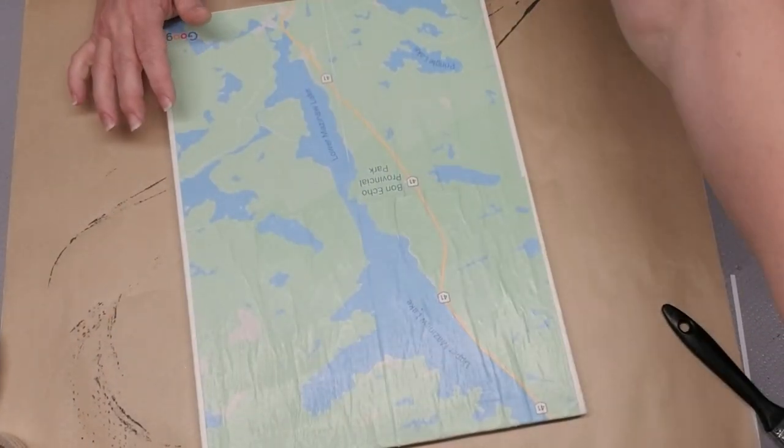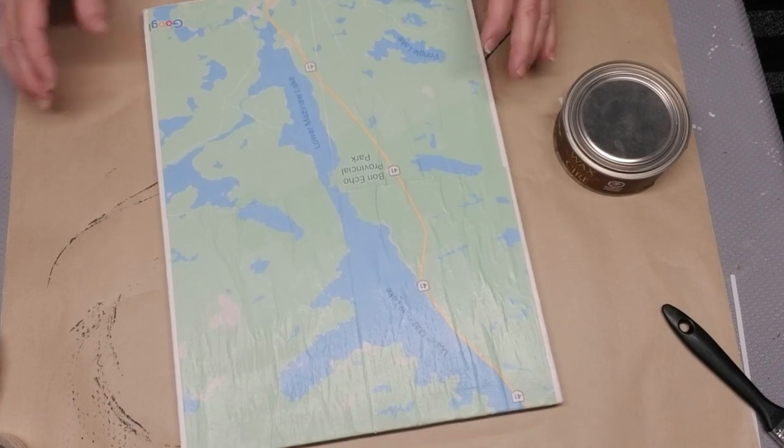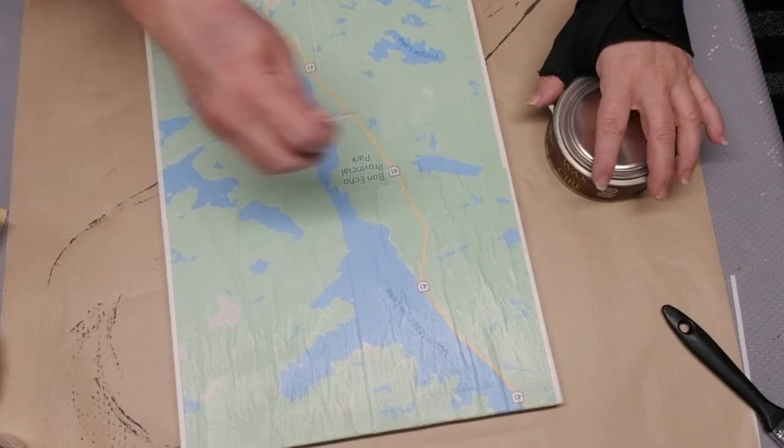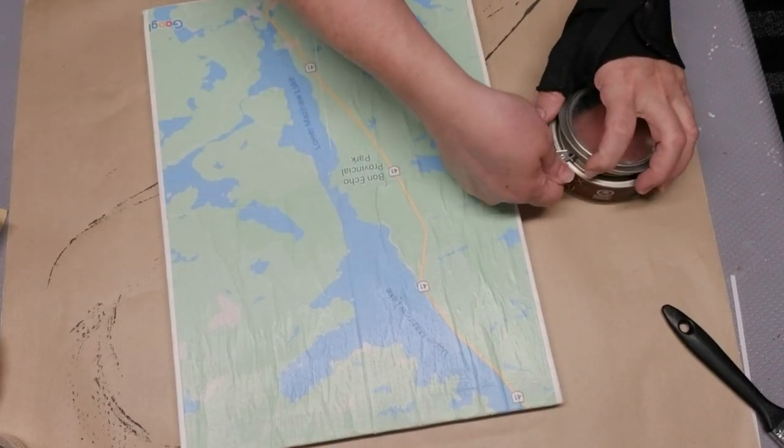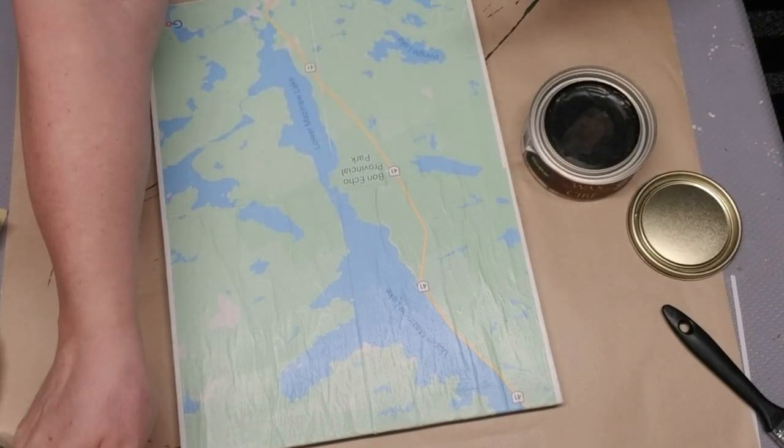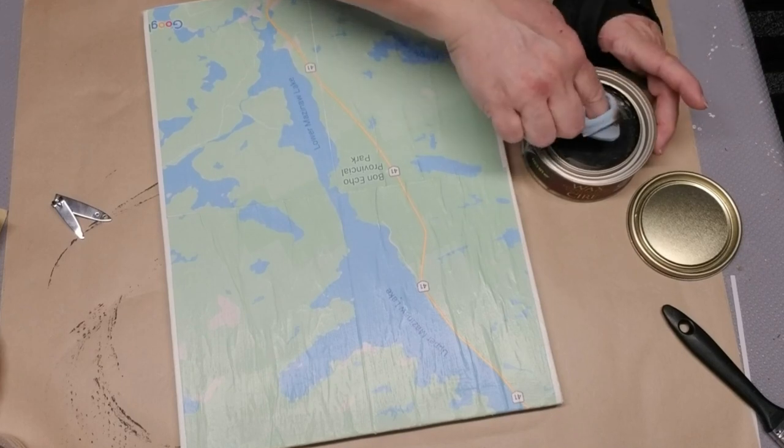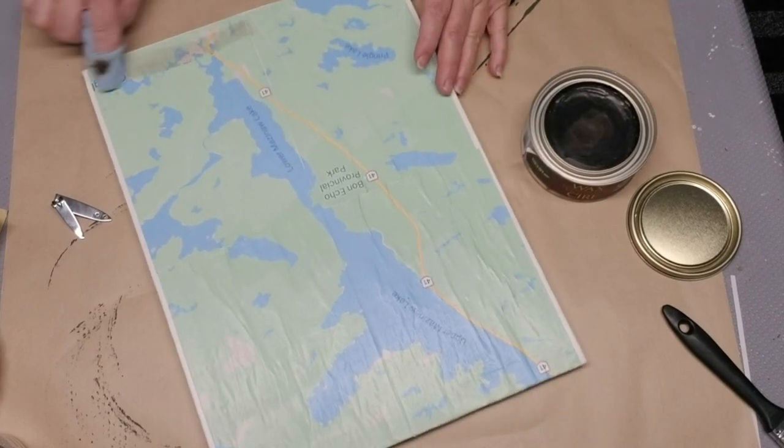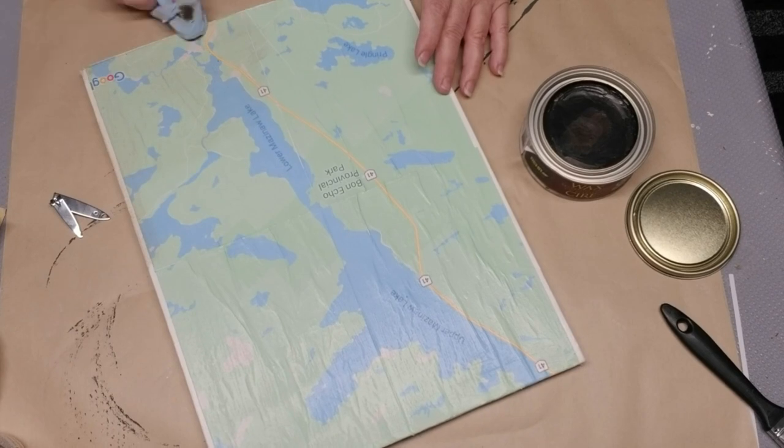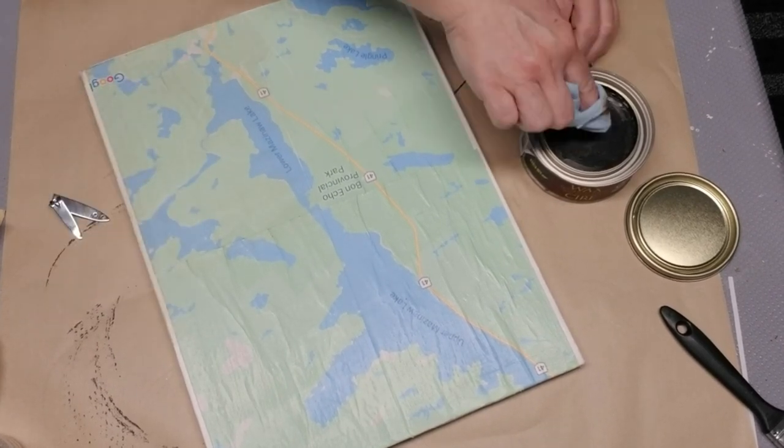To make this seem even more of an old map, I'm going to use some bare dark wax. I'm just going to use a cloth and wipe some on and then wipe it off. I'll do a little bit extra around the edges where you can see the white canvas to make it more distressed.